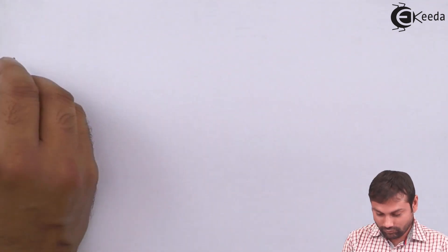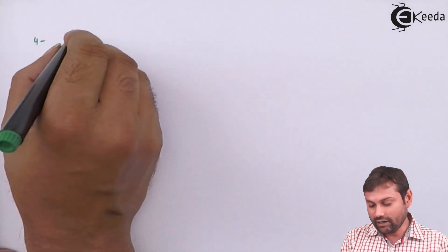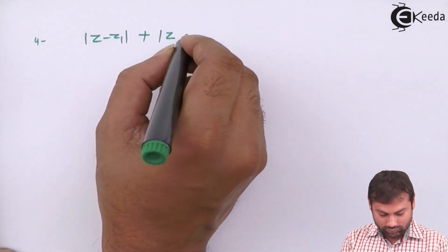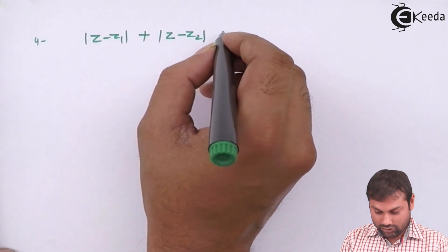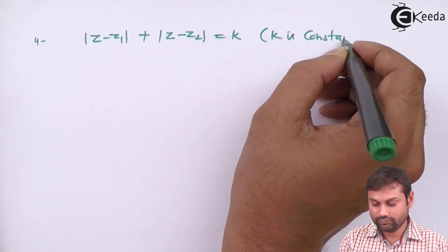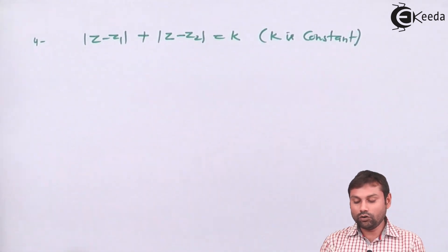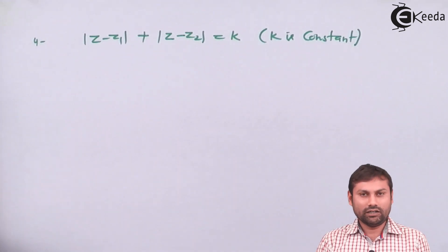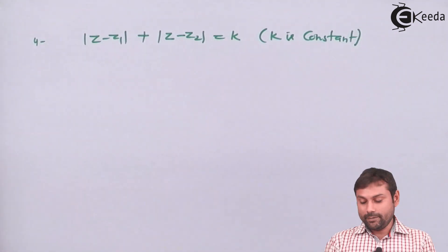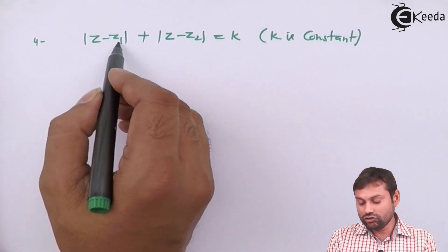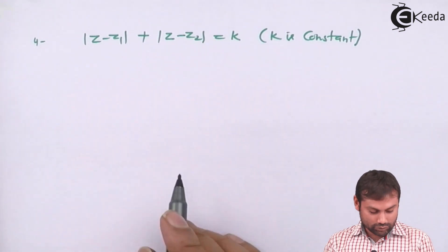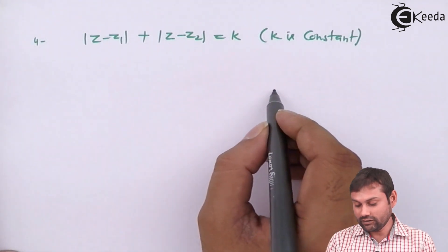Fourth one. If I write |z - z1| plus |z - z2| equals to K, where K is constant. Now, what does this equation represent? Here in geometry, distance from z to z1 plus distance from z to z2 equals to some constant number.